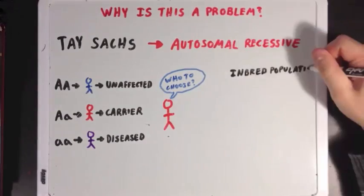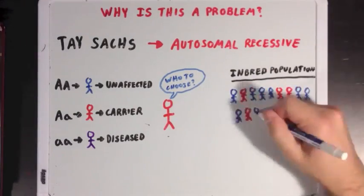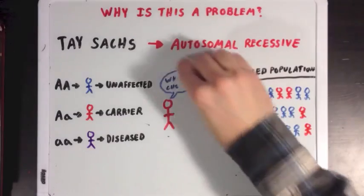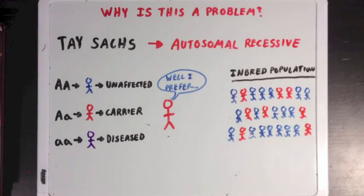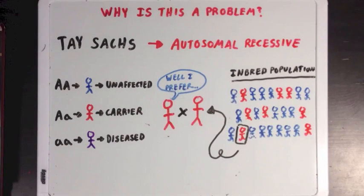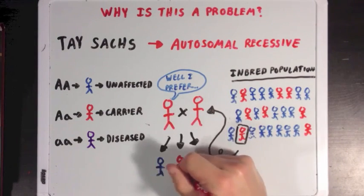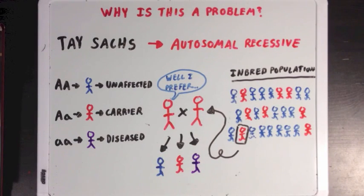Now, if we look at an inbred population where a bunch more people could be carriers for the disease, the chances of our guy choosing a mate that's also a carrier are a little higher. So more of his children will be carriers for the disease, but there's also a chance that some of his offspring may get two copies of the gene and actually be affected by the disease.